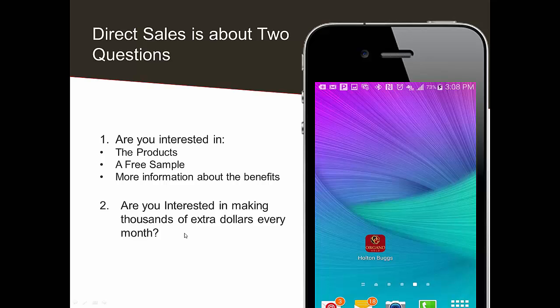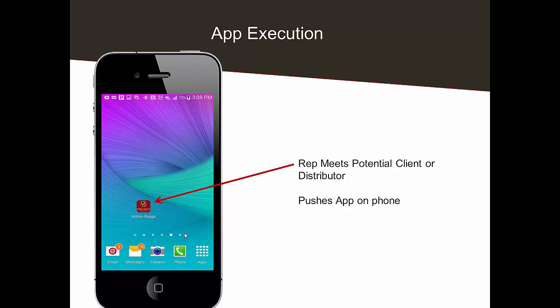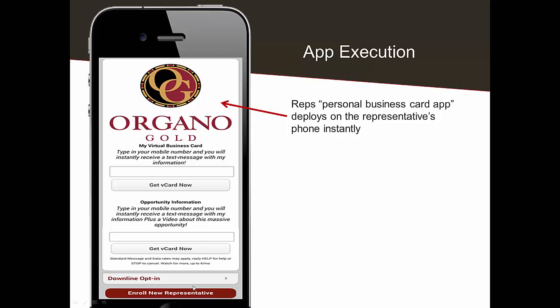The other thing we talk to people about is making extra money. You're standing there in line at the grocery store, talking to an old friend, and you say let me give you one of my cards. You hit your app on your phone, and it loads this page. The first form is where you're going to send people right to information about the products. You hand them your phone and say just type your mobile number in right there. We use digital business cards — they're environmentally friendly, saving the environment one business card at a time.